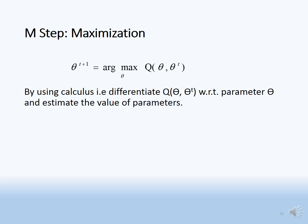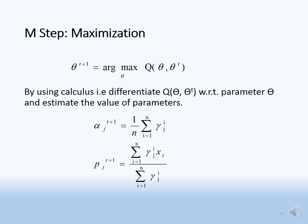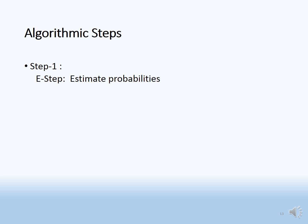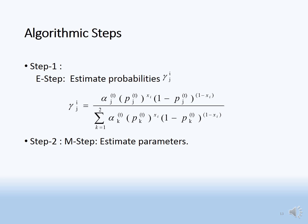The updated parameter values are: alpha_j^{t+1} equals the average of gamma_ji, and p_j^{t+1} equals the summation of gamma_j times x_i divided by the summation of gamma_ji. In summary, the two steps are: first, the E-step — estimate the probability gamma_ji using the given formula; second, the M-step — estimate and update the parameter using argmax of Q(theta, theta_t).